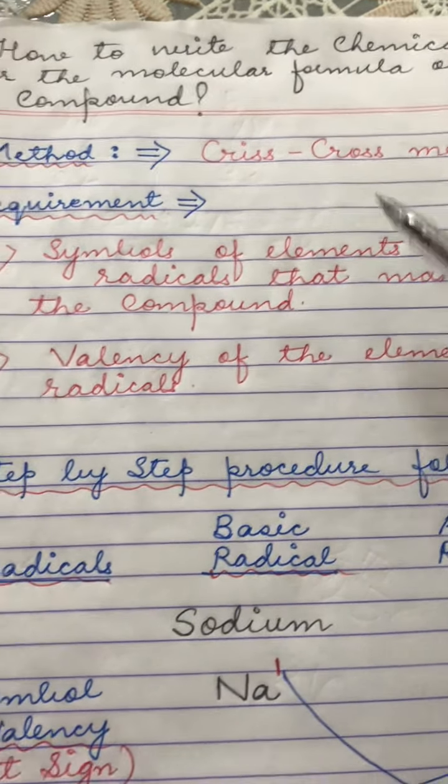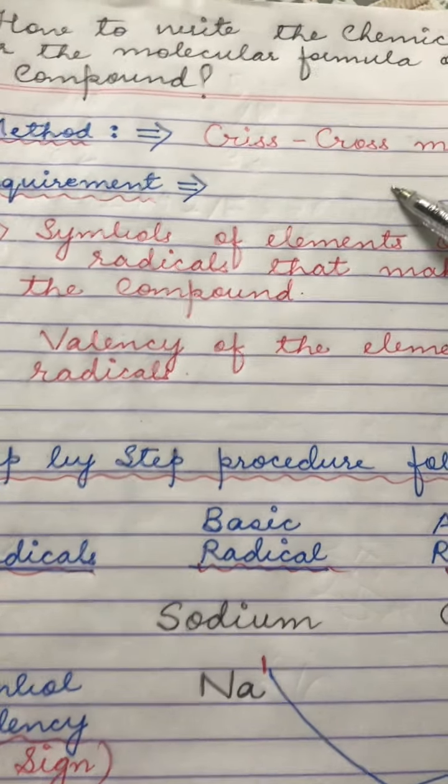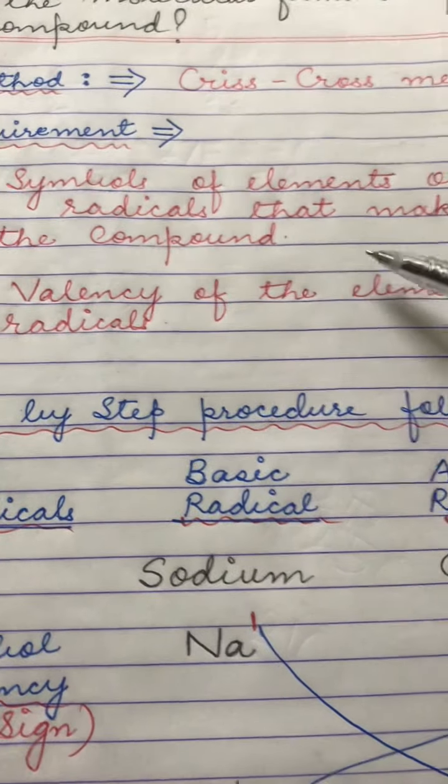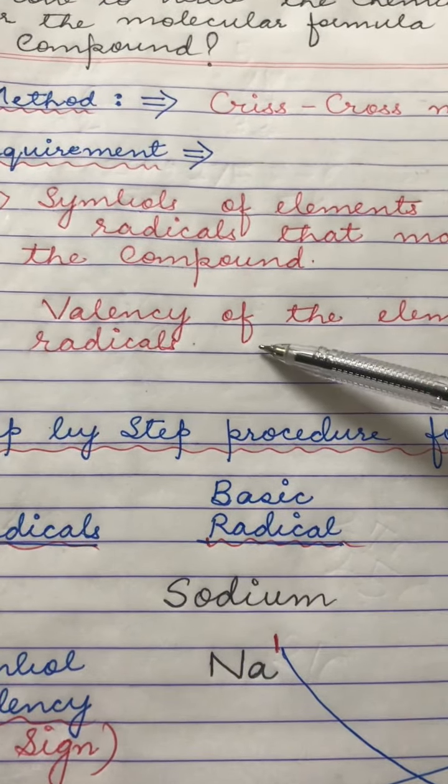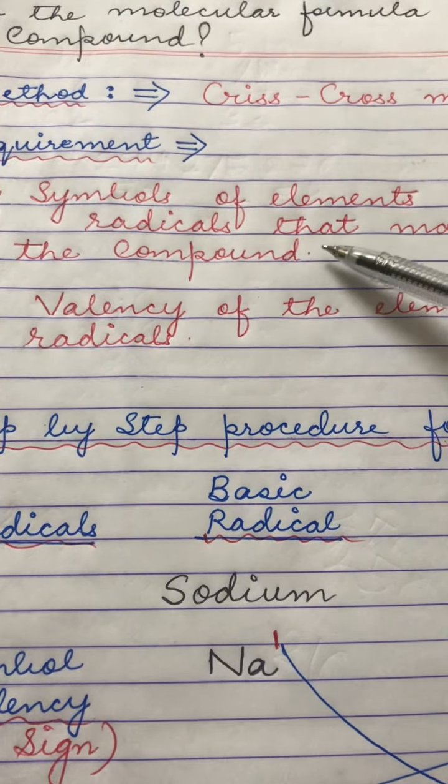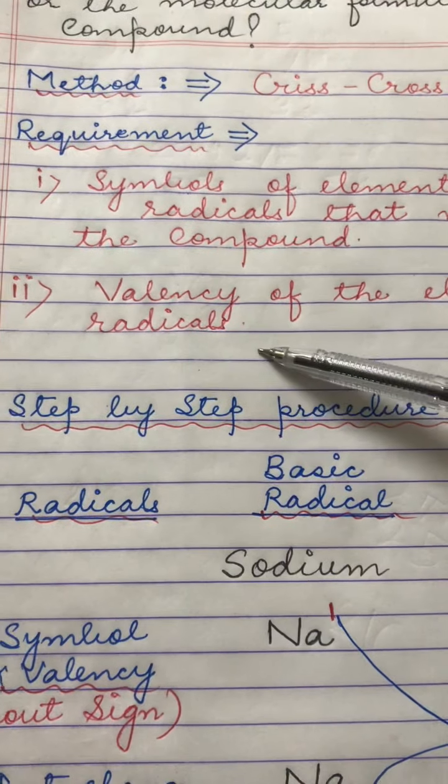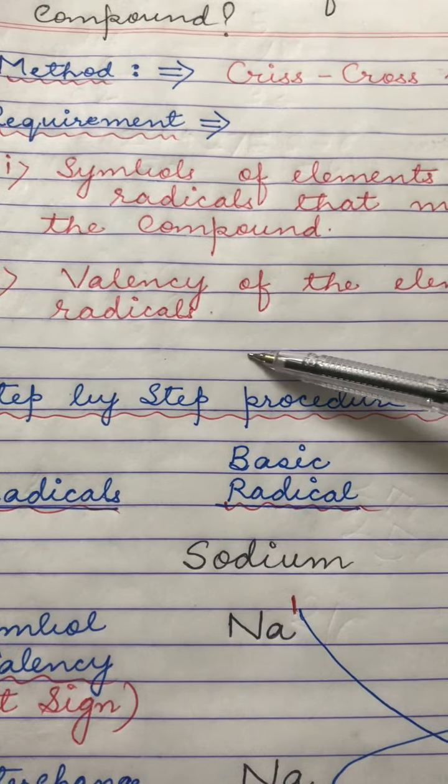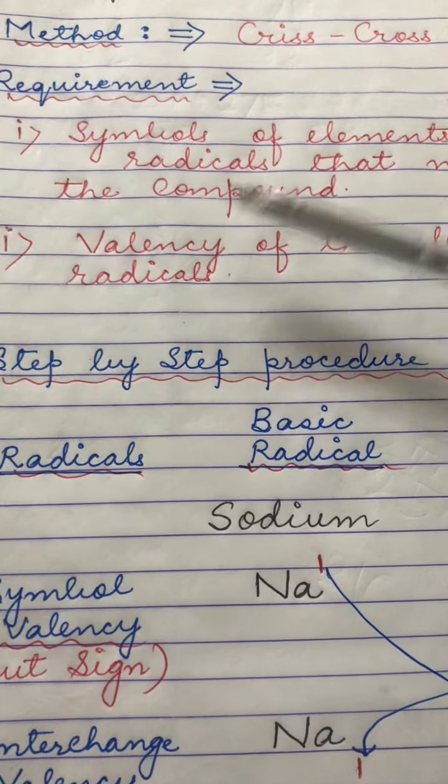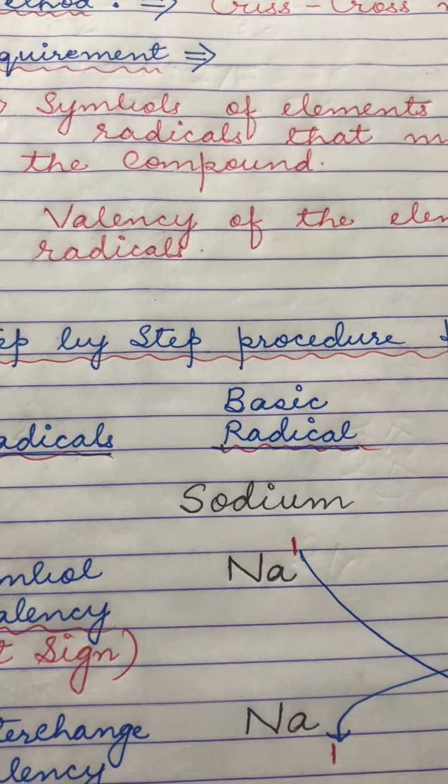The basic requirement for doing this crisscross method of writing a chemical formula is that you require the symbols of elements or radicals that make up any compound. So you need to learn the symbols of radicals and symbols of elements before you do this crisscross method. And the second thing that you require is the valency of elements or radicals. So if you have the information about these two, it is very easy to write formulae by simple crisscross method.